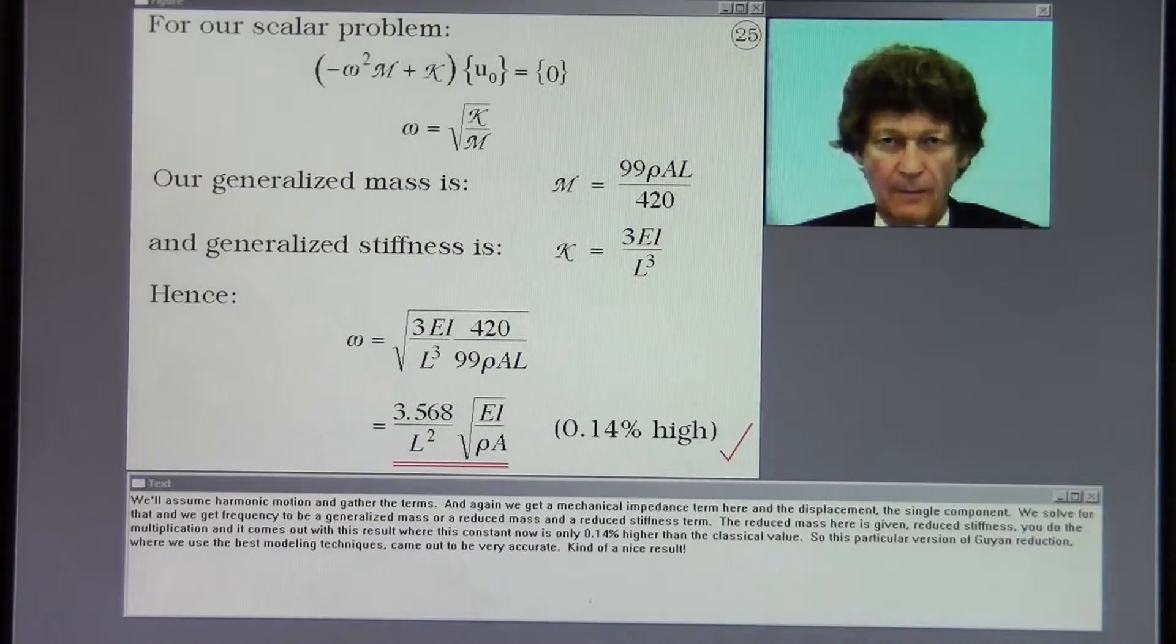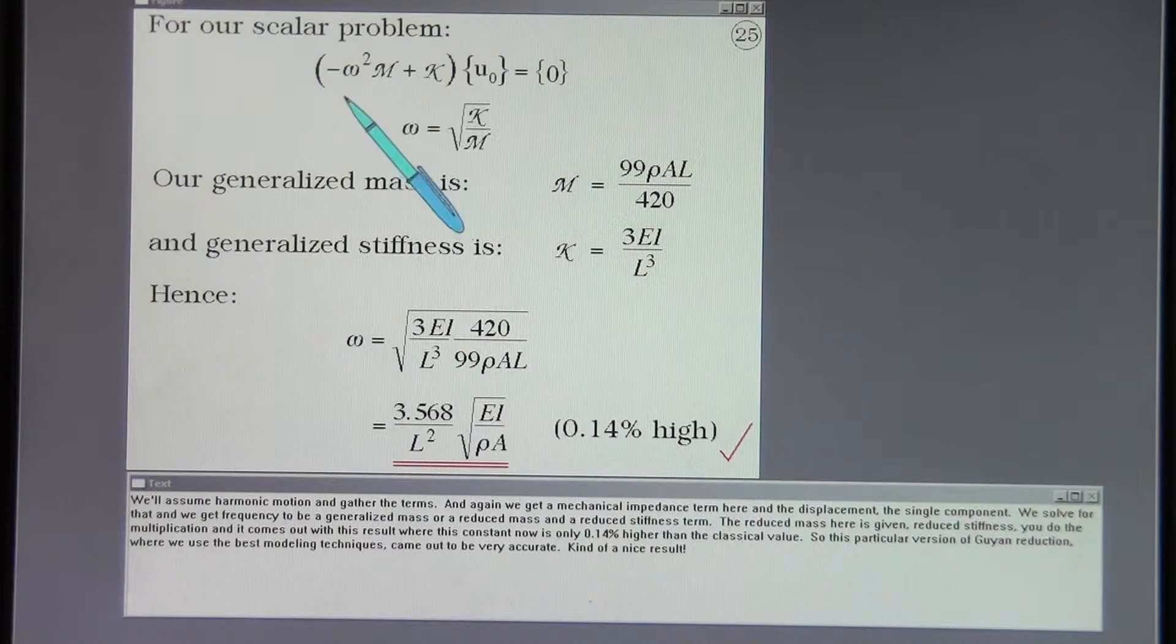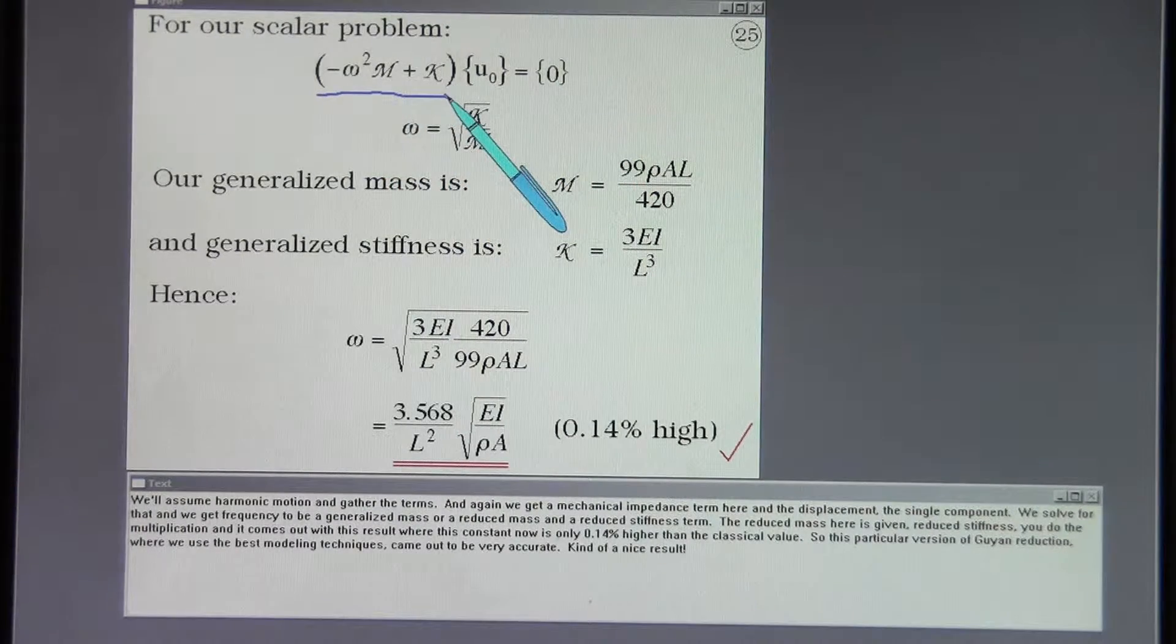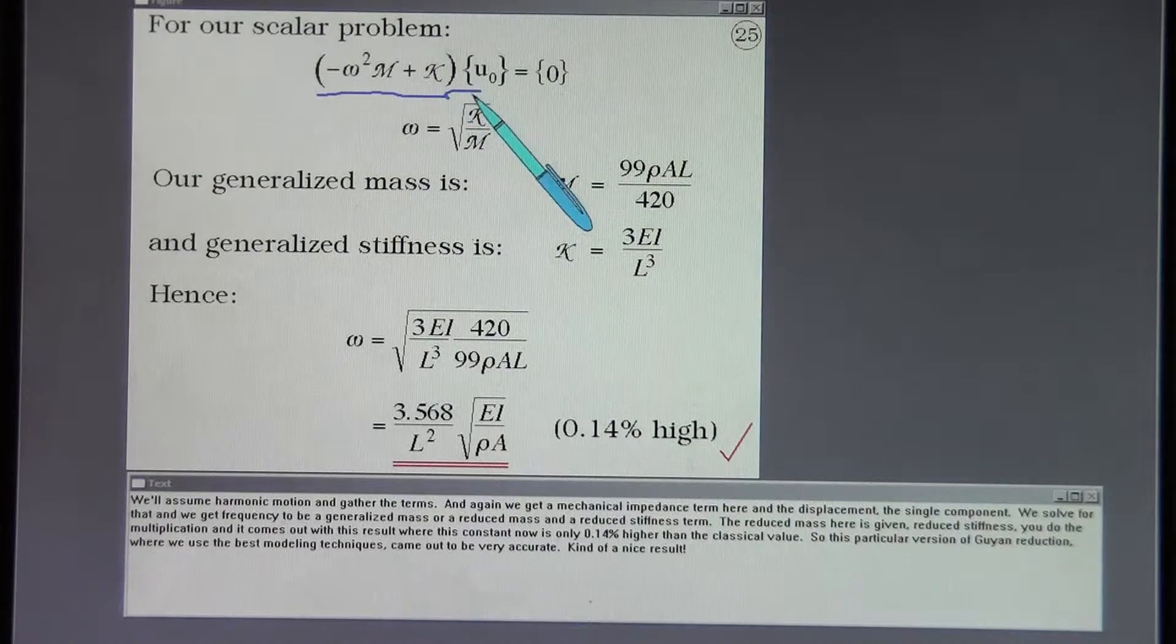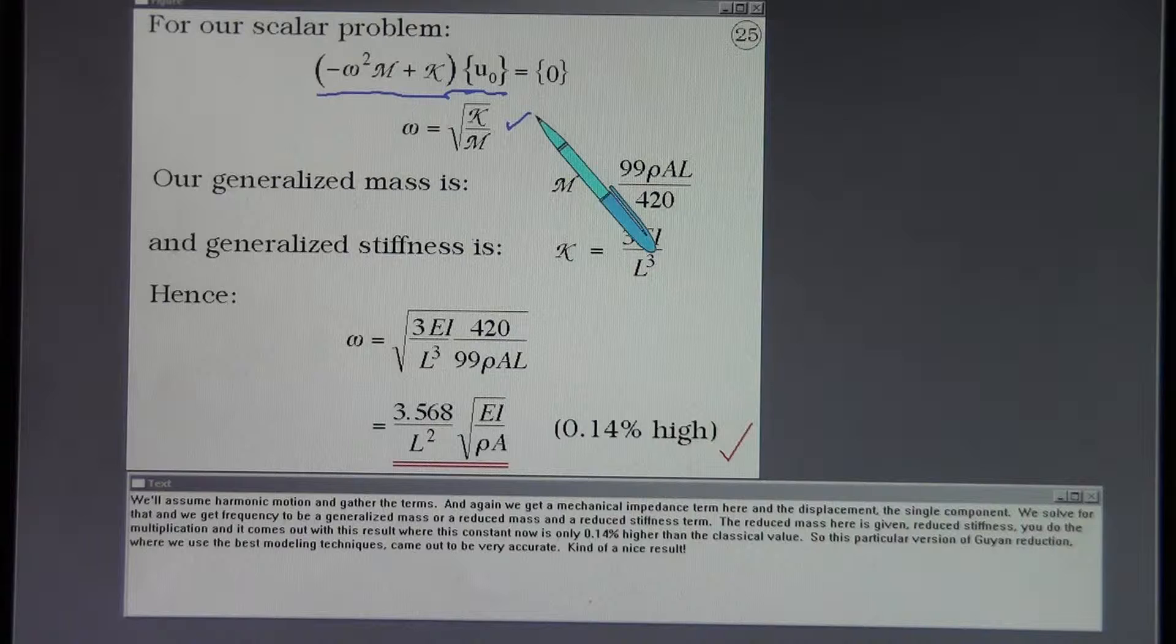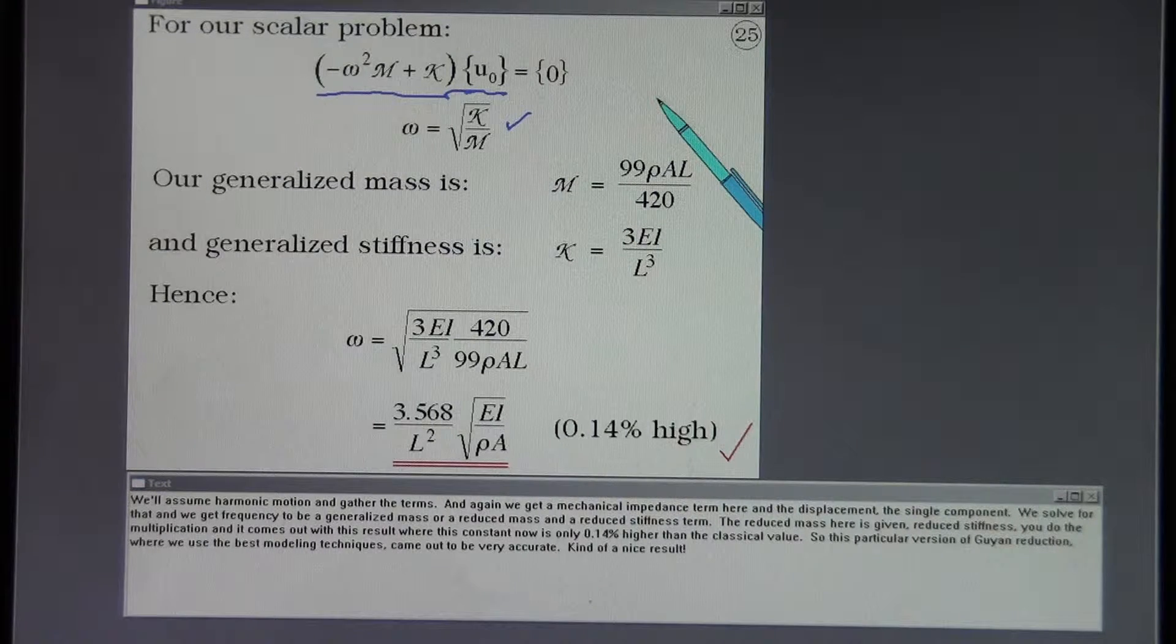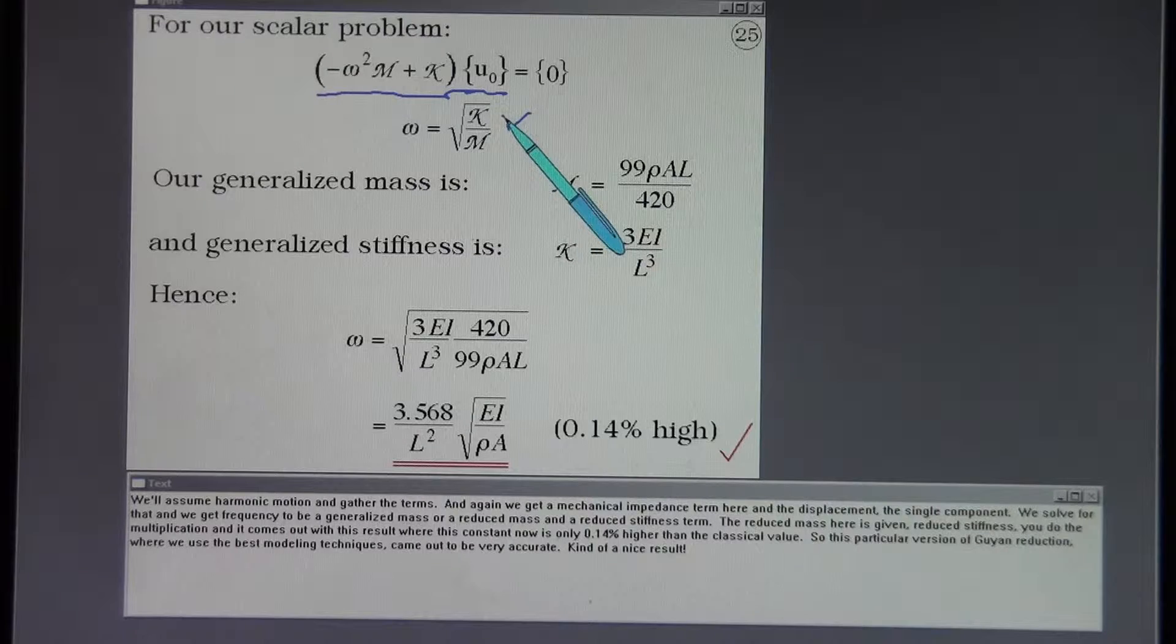We'll assume harmonic motion and gather the terms. And again we get a mechanical impedance term here and the displacement, the single component. We solve for that and we get frequency to be a generalized mass or a reduced mass and a reduced stiffness term.